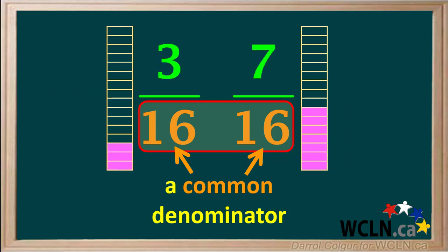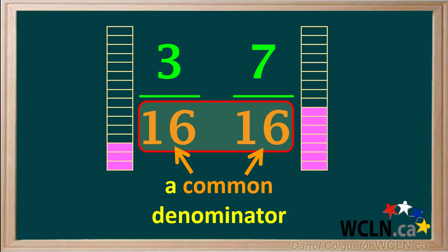For example, here are three-sixteenths and seven-sixteenths. We can clearly see how much larger the fraction seven-sixteenths is than three-sixteenths. And we can also clearly see how much larger the fraction 15-sixteenths is than seven-sixteenths.